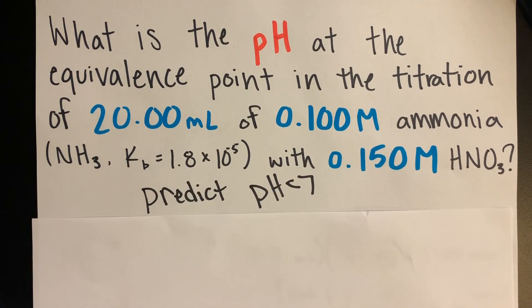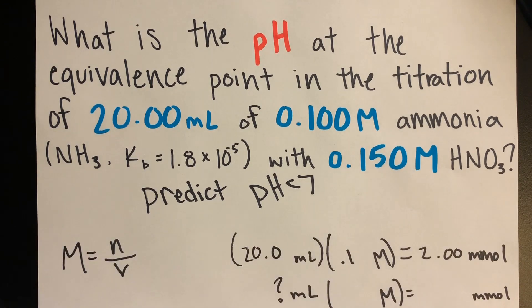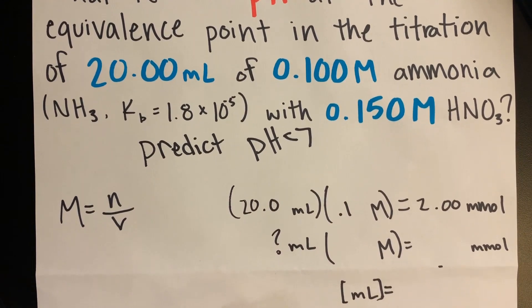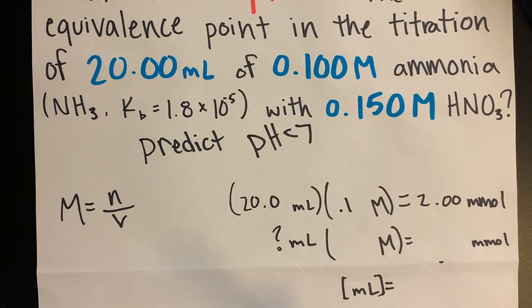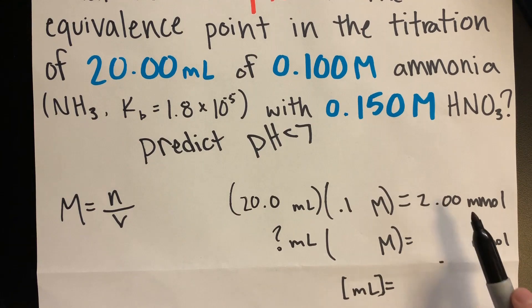The equivalence point in a titration is the point where the moles of acid and base are equal. So in order to calculate the moles of the weak base, we will use the definition of molarity. Molarity equals moles divided by volume. That would be 20 milliliters times 0.1 molar equals 2 millimoles.